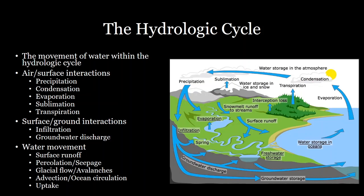We also have movement of water between the ground and the surface, such as infiltration, which is when water on the surface seeps into the ground, as well as groundwater discharge — such as in a spring — where water from a groundwater source flows out into a river, lake, or the ocean.